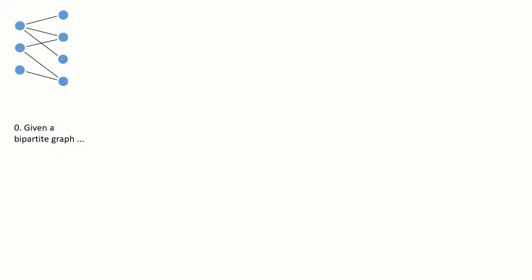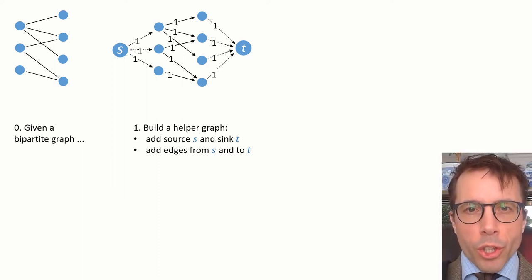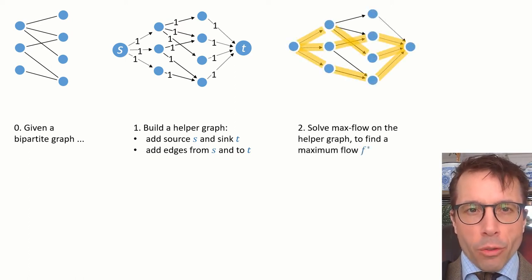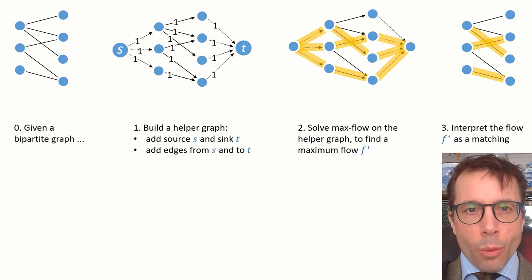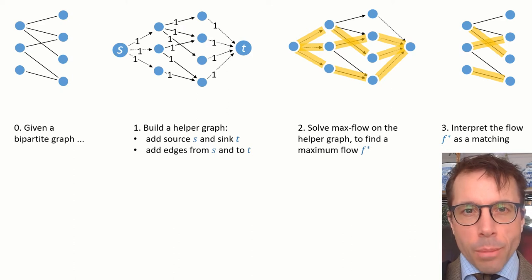And now, here's a strategy for solving this matching problem using the max flow algorithm from the last two videos. We'll start out with a bipartite graph, and we'll create a flow network. In other words, we're going to create a helper graph in which all the edges have directions and capacities, as we can see here, and we've added two new vertices, one for a source and one for a sink. Next, we'll find a maximum flow on this helper graph. Let's call it F*. And then we're done. We just reinterpret our max flow F* as a matching. In other words, we ignore the source and the sink and only pay attention to the edges with flow. And then, hey presto, we have a matching.